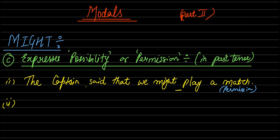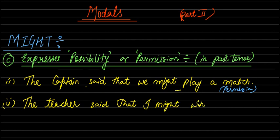Second example: The teacher said that I might win a scholarship. What is the sentence saying? The teacher said that you can tell you that you might win a scholarship.